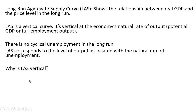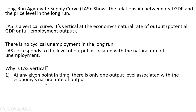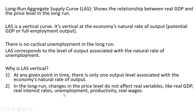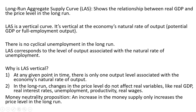Why is the long-run aggregate supply curve vertical? At any given point in time, there's only one output level associated with the economy's natural rate of output, or potential real GDP. In the long run, changes in the price level do not affect real variables like real GDP, real interest rates, unemployment, employment, productivity, and real wages. This idea is consistent with the money neutrality proposition — the idea that an increase in the money supply only increases the price level in the long run; it doesn't affect real things like real GDP.